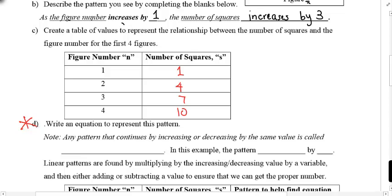Okay, so here's the hard part. Now I'm going to ask you to write an equation to represent this pattern. Now, before we actually write the equation, I want to let you know that any pattern that continues by increasing or decreasing by the same value, which is kind of what we set up here, right? Increases by three every single time. We have a special name for that type of pattern. It's called a linear pattern. Linear pattern. And I'll show you why in the next few lessons. But right now, just trust me, it's called a linear pattern. And in this example, the pattern increases by three.